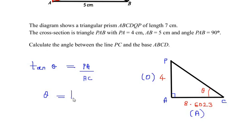Of PA whose value is 4 divided by AC which is 8.6023. Let us see what value we get here.